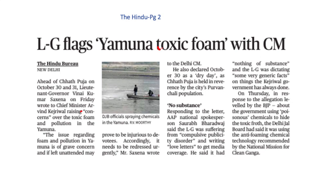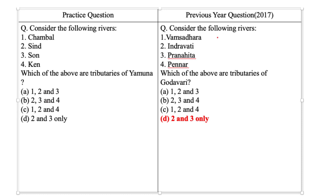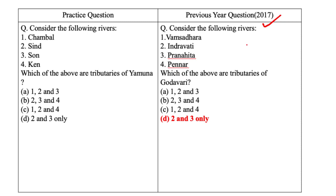The next question is inspired by a Hindu newspaper article about concerns over toxic foam and pollution in the Yamuna River ahead of Chhath Puja. UPSC has always framed questions on geographical features like landforms, rivers, and ecosystems. A 2017 question was based on tributaries of Godavari. The practice question: which of the following are tributaries of the Yamuna River? The options are: 1. Chambal, 2. Sin, 3. Son, and 4. Cane. Yamuna is the westernmost and longest tributary of the Ganga River, with its source in the Yamunotri Glacier on the western slopes of Bandargun's range, joining the Ganga at Prayag.